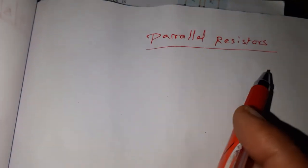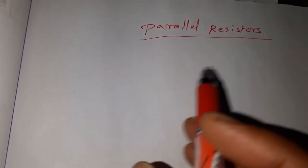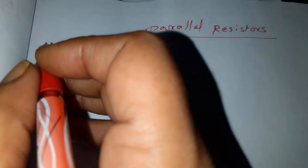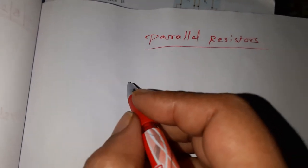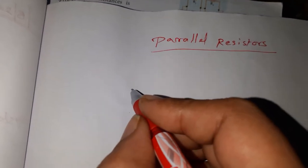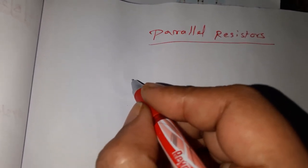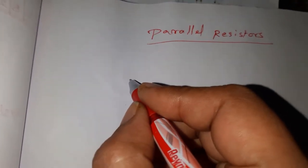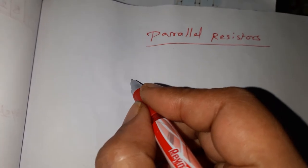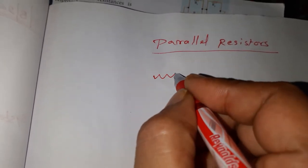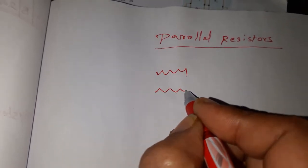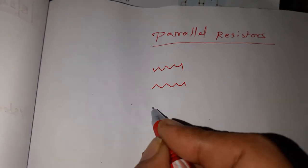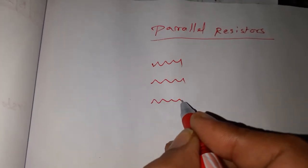Now we are going to see the parallel resistors. Already we have seen the series resistance. In parallel resistance, the diagram will be like this. Different loops will be there. For example, the first resistance, the second resistance and the third resistance.